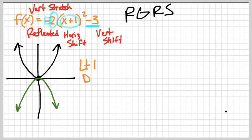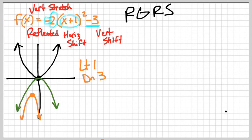This one goes down 3, so left 1, down 3 — that's where my new critical point, or vertex, is going to be. The 2 in front means it's going to be a little more narrow — a vertical stretch — meaning it's going to be a little taller than usual, or the slope is going to be more steep than usual. So that is what my graph would look like.